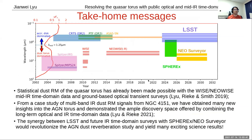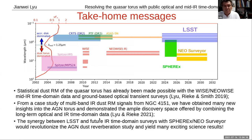In conclusion: statistical dust reverberation mapping of the quasar torus has already been made possible with the WISE/NEOWISE mid-infrared time domain data and ground-based optical transient surveys. From a case study of multiband infrared dust reverberation signal of NGC 4151, we have obtained many new insights into the AGN torus and demonstrated ample discovery space offered by combining long-term optical and infrared time-domain data. The synergy between LSST and future IR time-domain surveys such as Sonics and the New Surveyor would revolutionize the AGN reverberation mapping study.